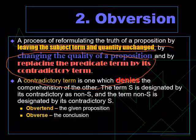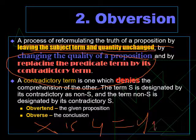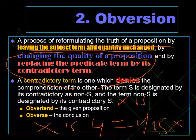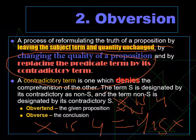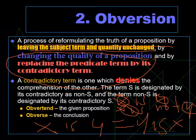For example, in conversion, when X is Y, it becomes Y is X — that's conversion. But in obversion, when X is Y, the subject X stays, and Y becomes non-Y. The subject and predicate positions are retained. The contradictory term is one which denies the comprehension of the other — designated as non- prefix.